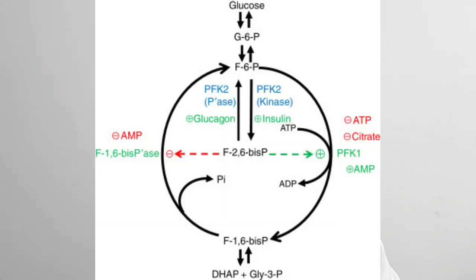When the phosphatase subunit of PFK2 is active, it converts fructose 2,6-bisphosphate back into fructose 6-phosphate, decreasing the concentration of fructose 2,6-bisphosphate in the cytoplasm. This removes the positive activating signal on PFK1, so PFK1 activity is not increased.